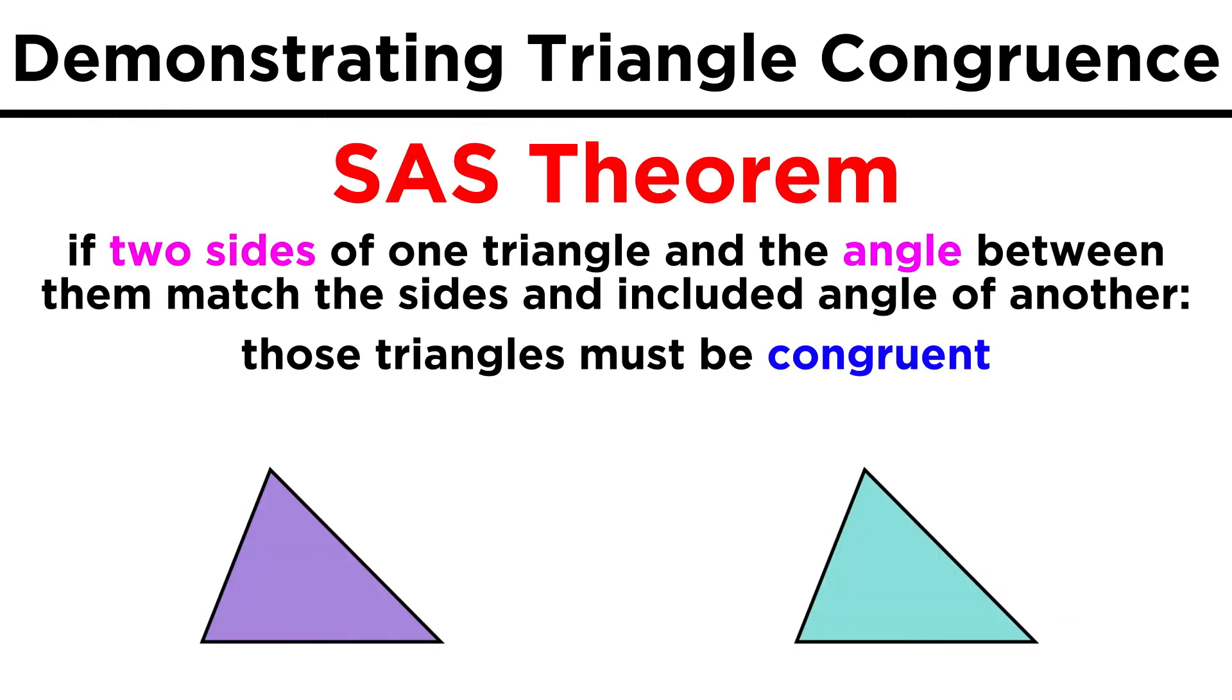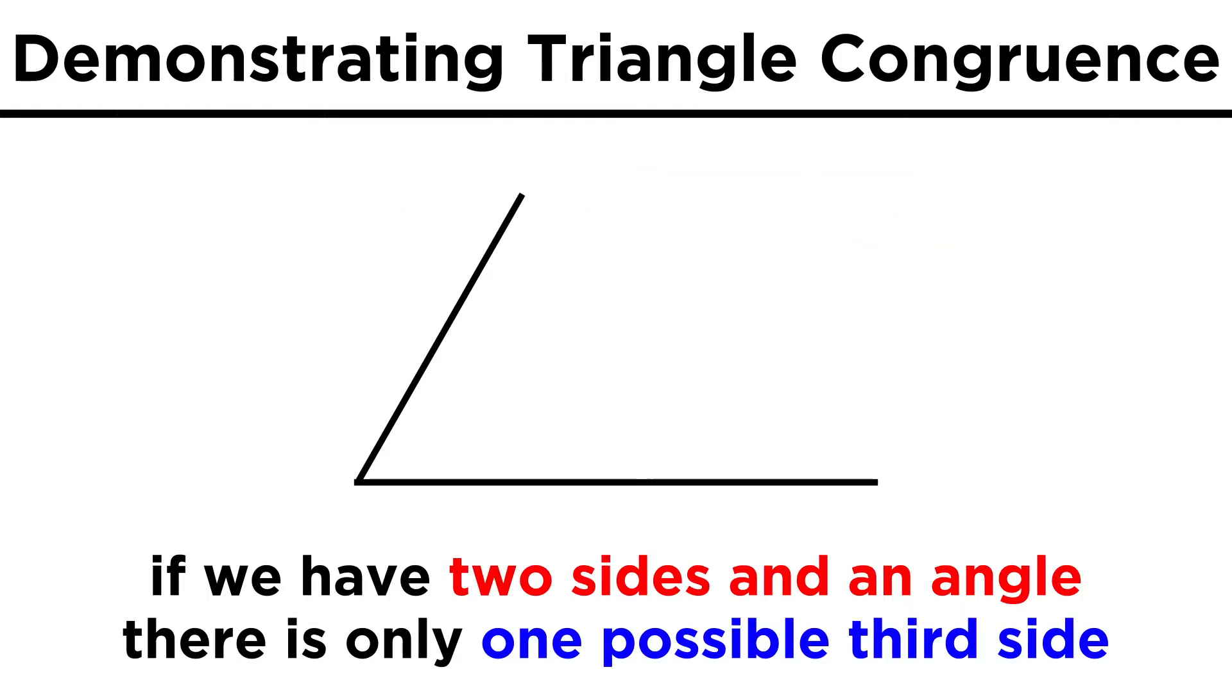Similarly, we can use the side-angle-side theorem. If two sides of a triangle and the angle between them are identical to the two sides and included angle of another triangle, they must be congruent. If we construct this much of a triangle, there will only be one possible way to connect the two open ends.